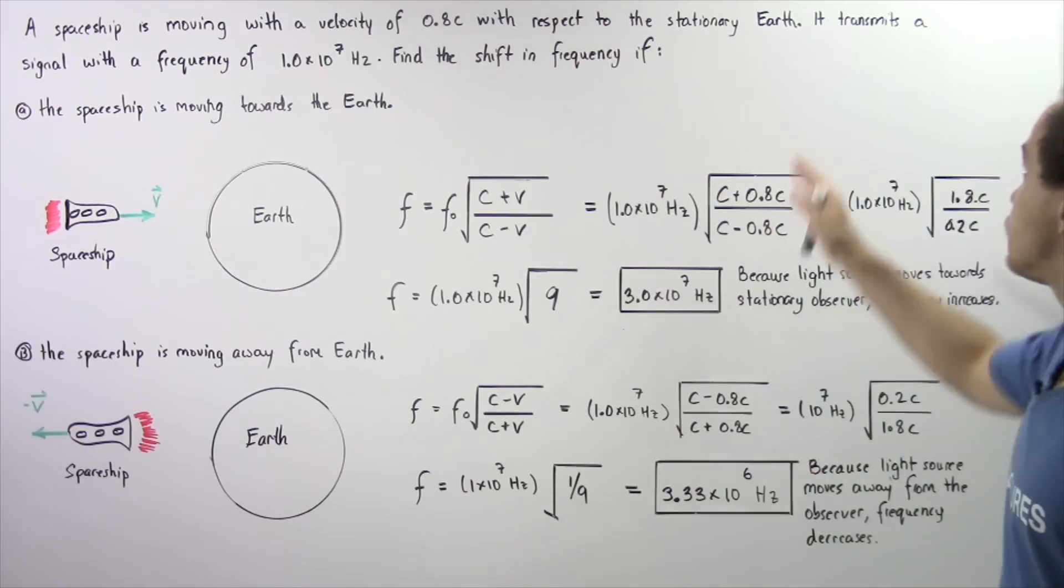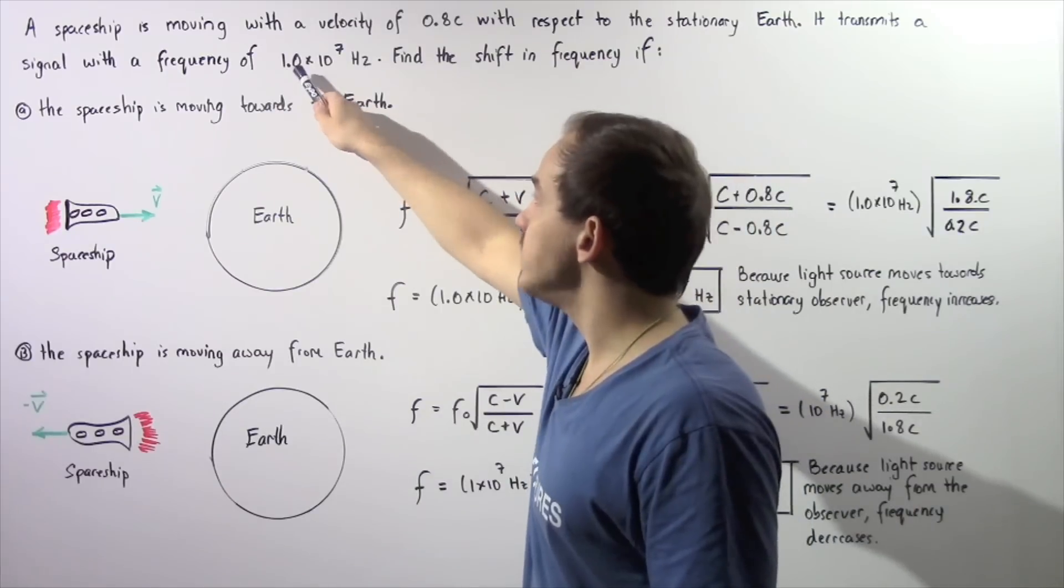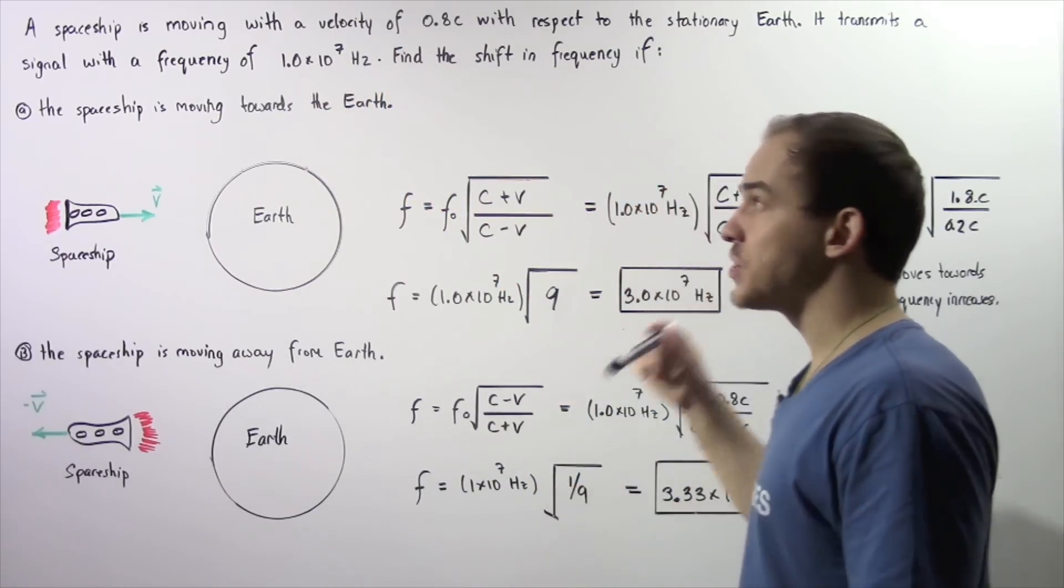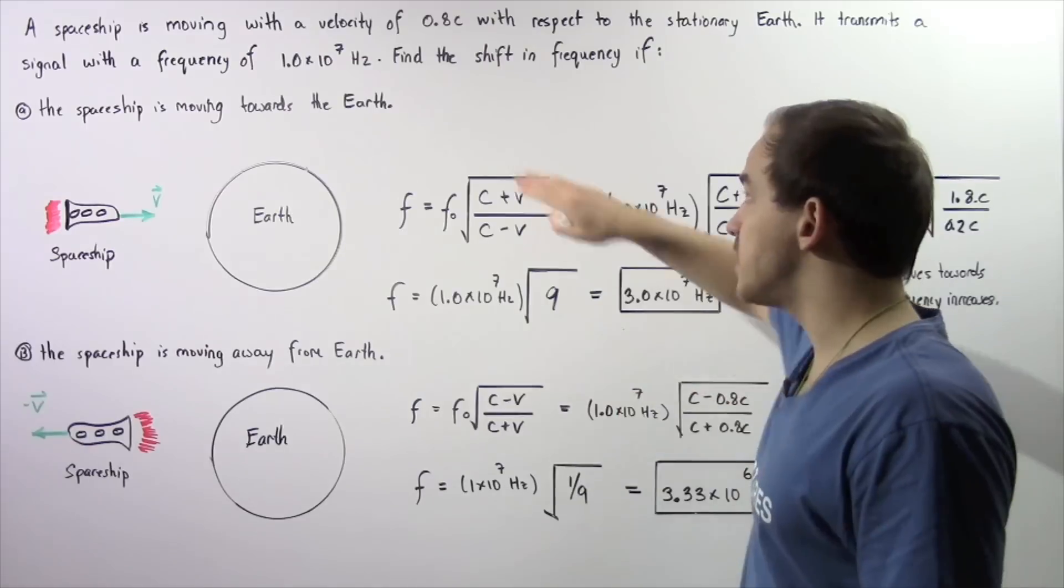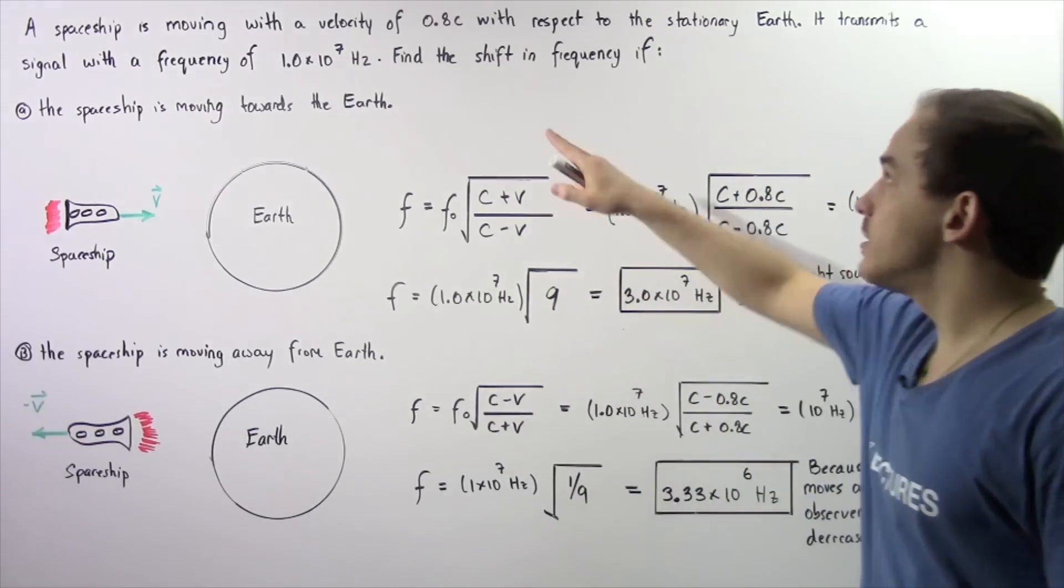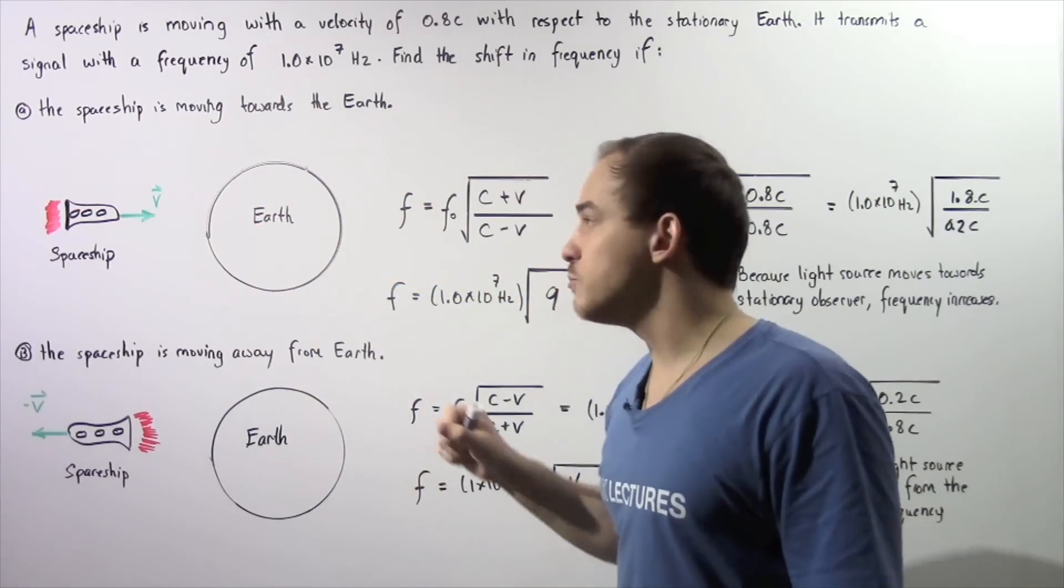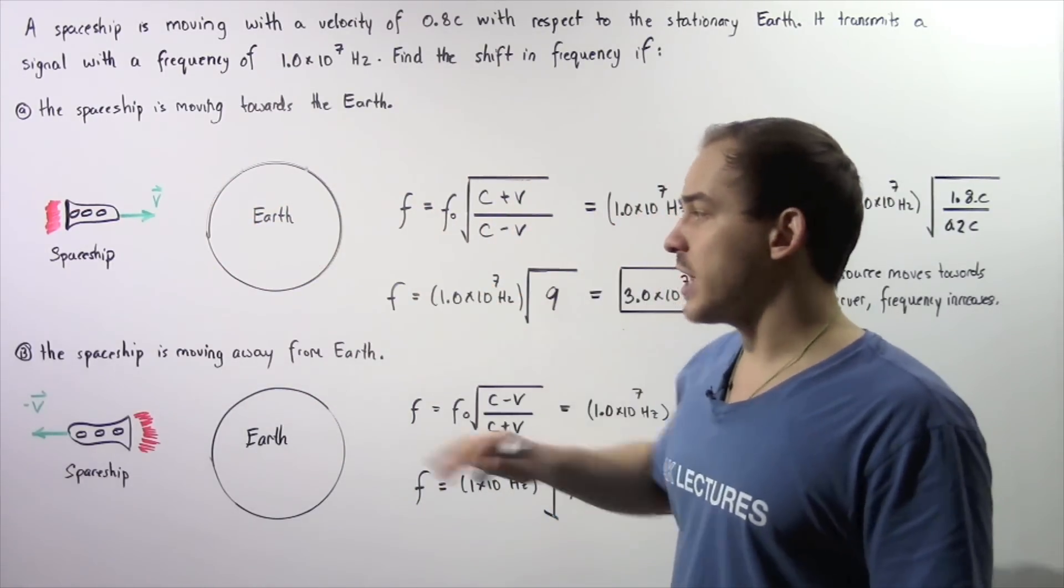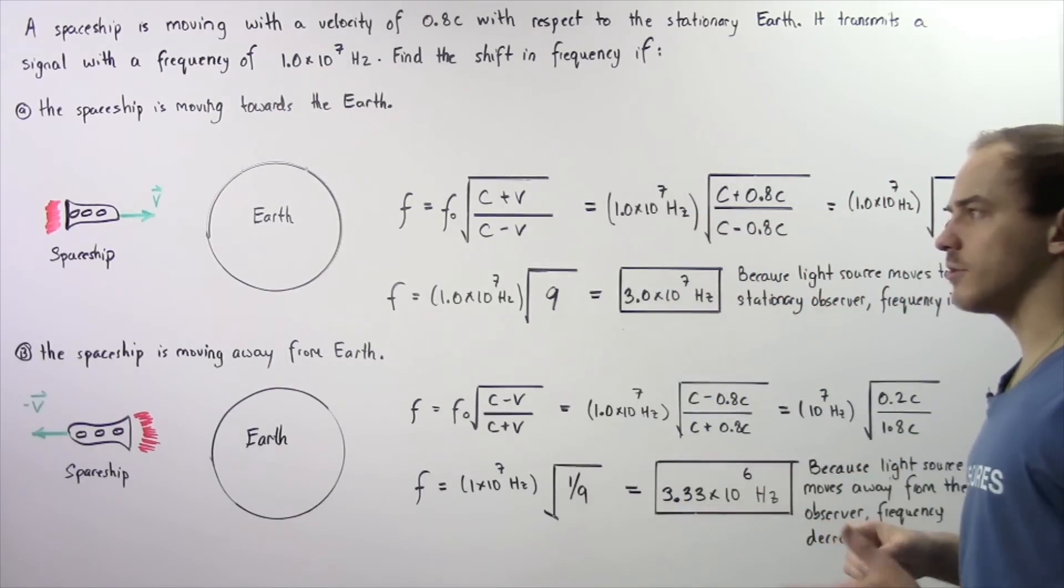If that spaceship transmits a signal with a frequency of 1×10^7 Hz in the same direction as the motion of that spaceship, we want to find the shift in frequency if, in part A, the spaceship is moving towards the Earth and in part B, the spaceship is moving away from the Earth.